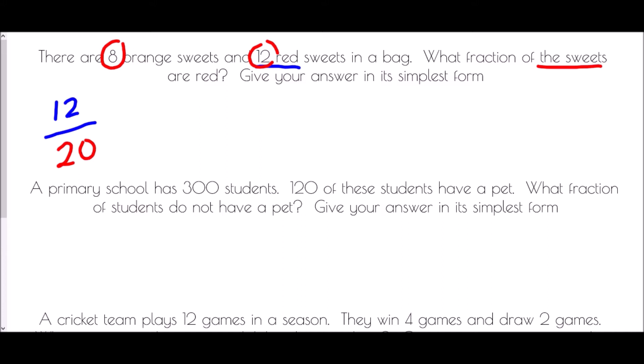We are asked to give the answer in its simplest form, so we need to simplify the fraction. What number goes into 12 and 20? We can divide both by 2 to get 6 out of 10, and then divide by 2 again to get 3 out of 5.